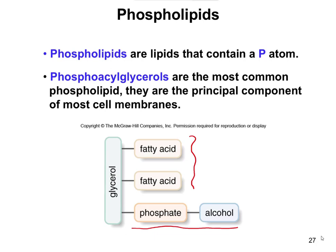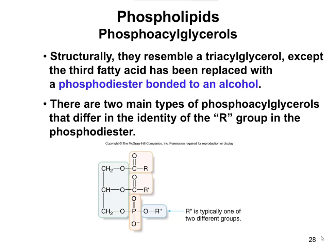Once we talk about the phospholipids and phosphoacylglycerols specifically, we're also going to talk a little bit about cell membranes and how these phospholipids play a role in those. They're very similar to a triacylglycerol, except that the bottom part is what we're going to call a phosphodiester bond. A phosphodiester bond is something you should learn because it's going to come up again whenever we talk about nucleic acids.